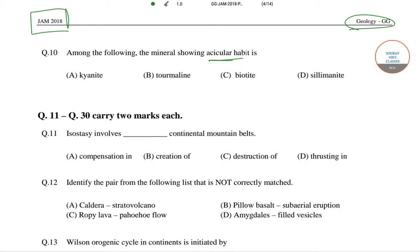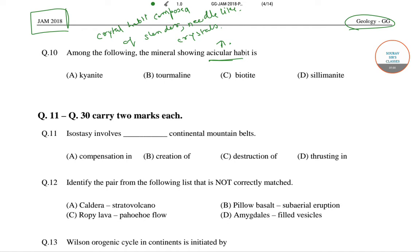Acicular habit in mineralogy refers to a crystal habit composed of slender, needle-like crystals. The crystals with these habits are very fragile and complete undamaged specimens are very uncommon.